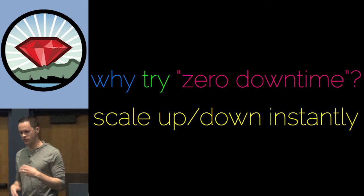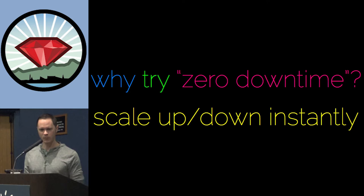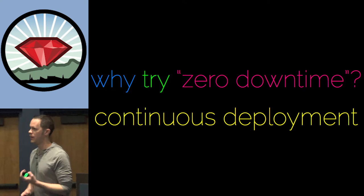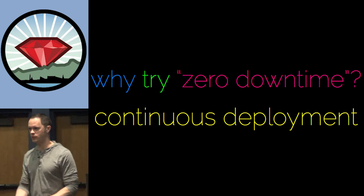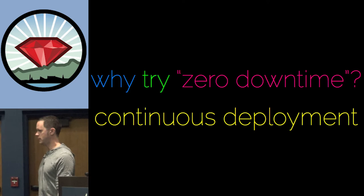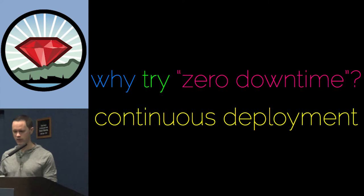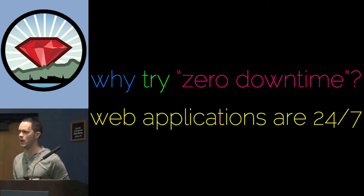Unicorn allows you to scale up and down the workers instantly, adding more capacity to your apps without necessarily having to restart your app. If you want to do continuous deployment — on a number of our apps, whenever you check something into Git it goes through the process of running all the tests, and if all tests pass we do a deploy. Features, fixes, all of that happens — we probably do that maybe seven to ten times during the day, without any downtime at all. Your web applications are 24/7, so there's no reason the servers powering them should be any different.